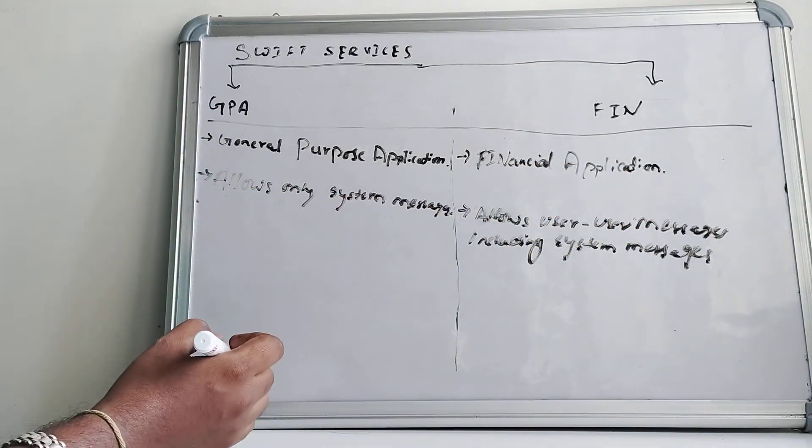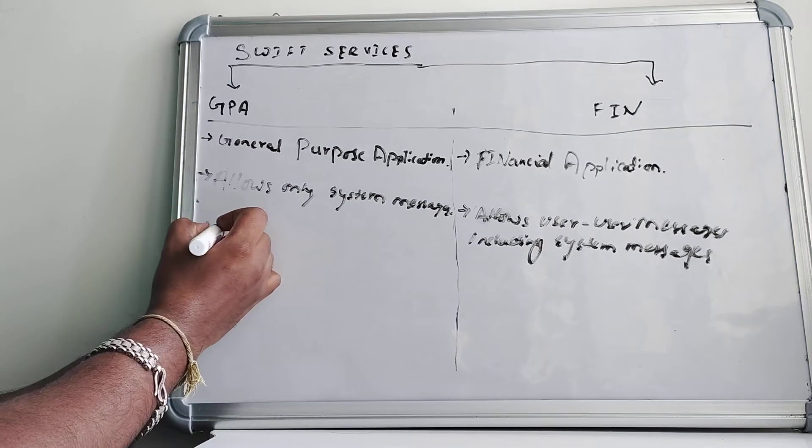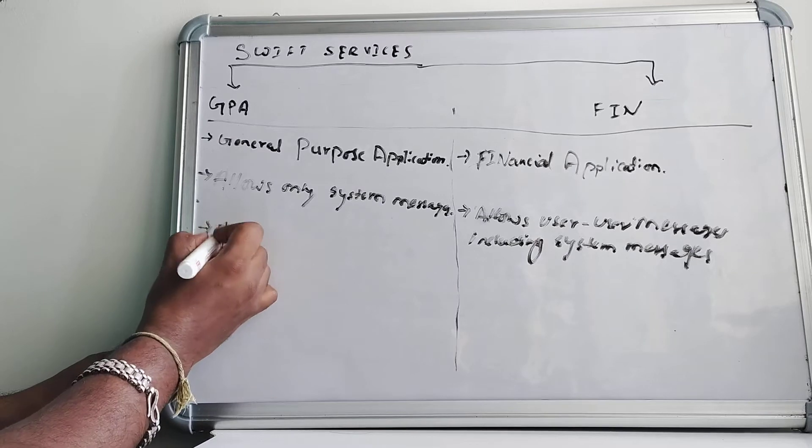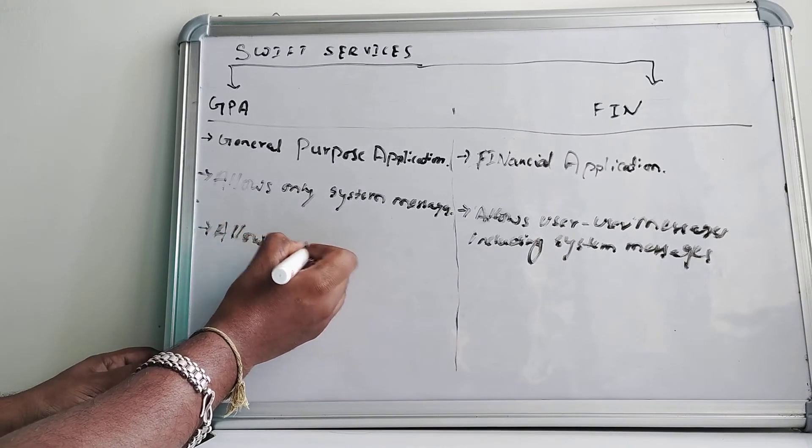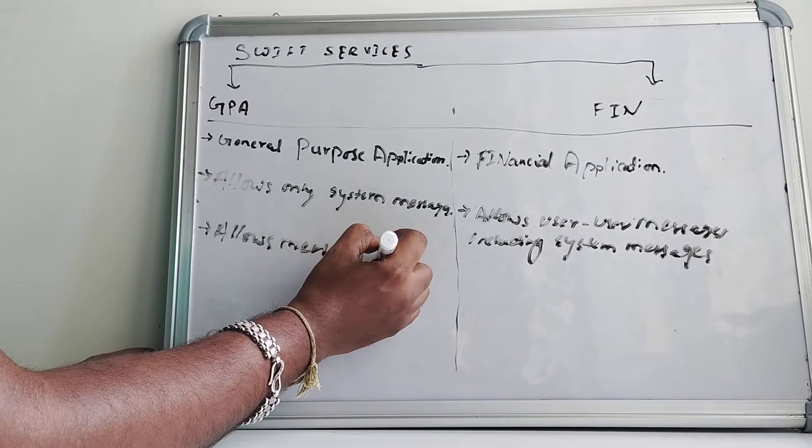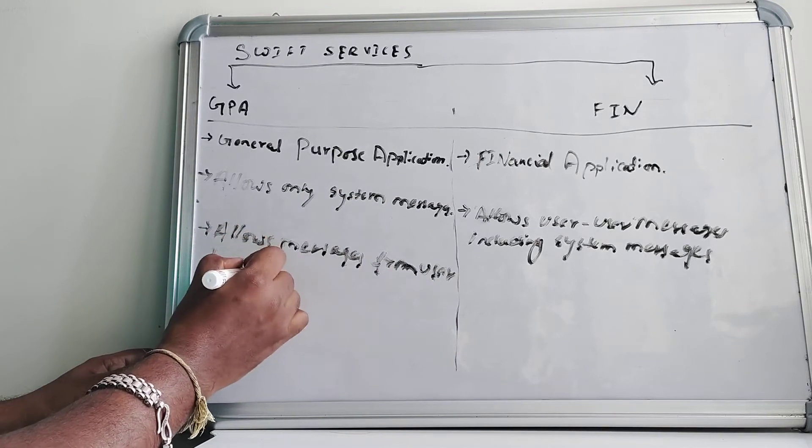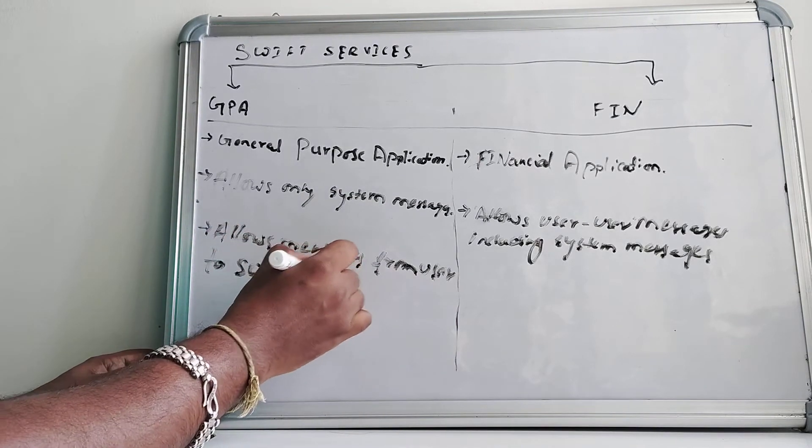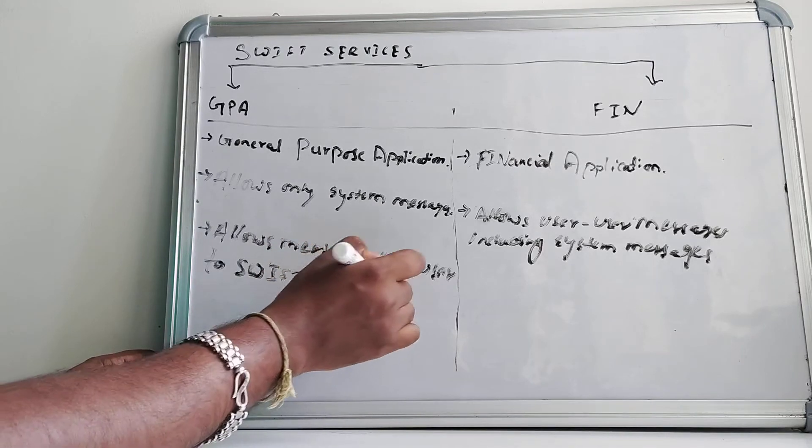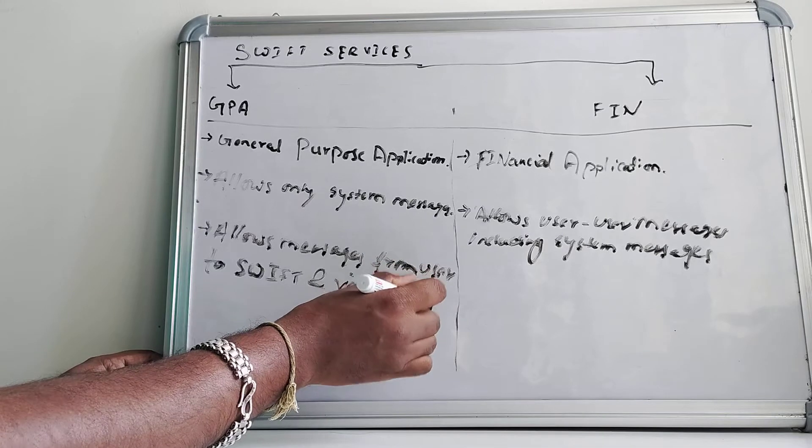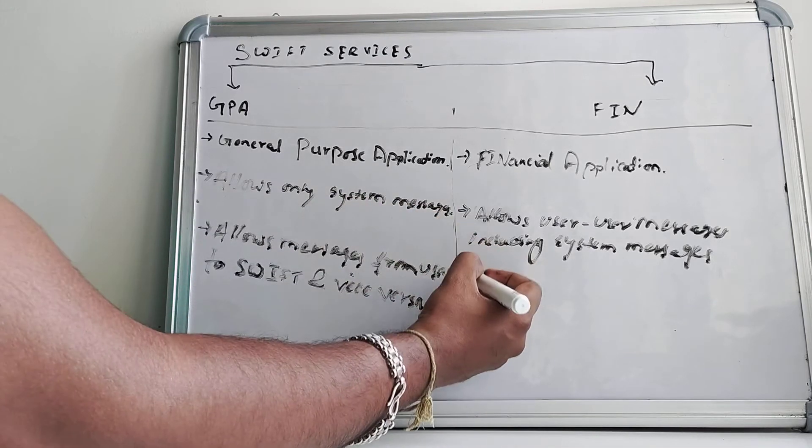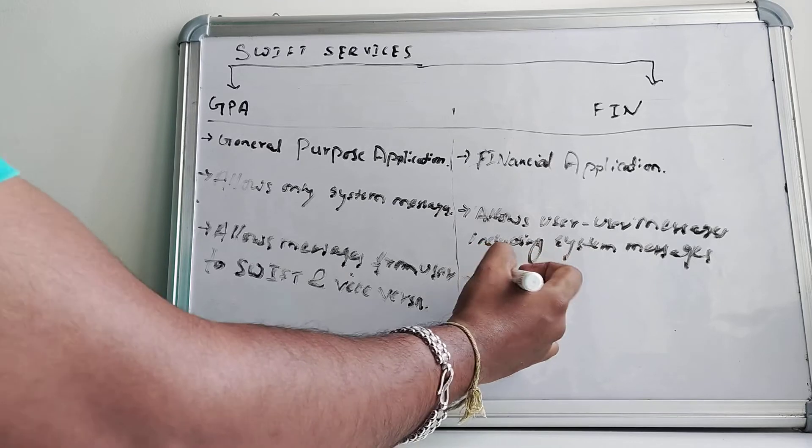What this means is it allows messages from user to Swift and vice versa - from user to Swift network and vice versa, where Swift can send to user. It allows system messages.